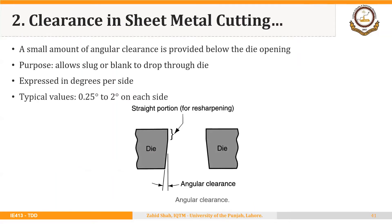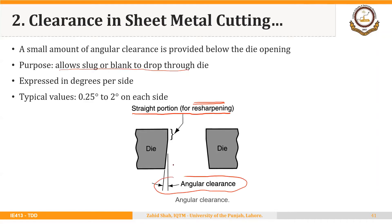Apart from the clearance between punch and die, we also need to assign angular clearance. There is a straight portion of the die used for resharpening, which extends the life of the die. A small amount of angular clearance is provided below the die opening to allow the slug or blank to drop through the die. This angle is also expressed in degrees per side, ranging from 0.25 to 2 degrees on each side.